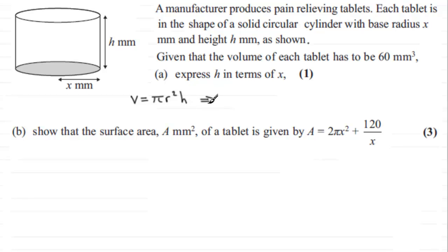So that means for us, we've got the volume is 60, equals π times the radius, which is x, square that, and multiply it by the height h.